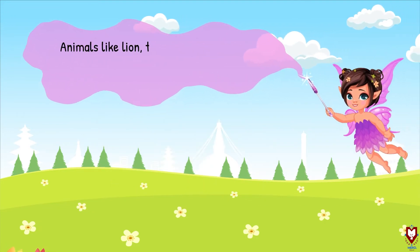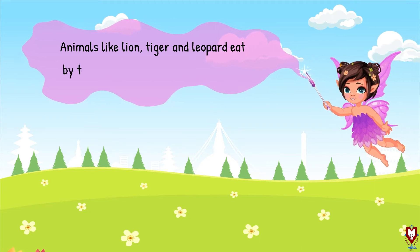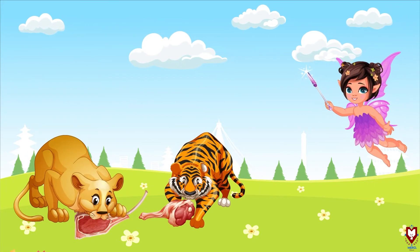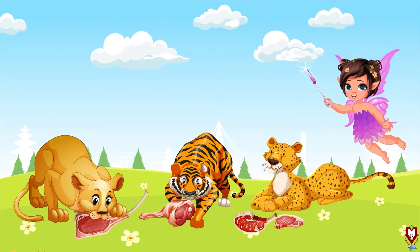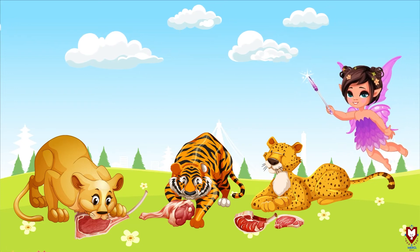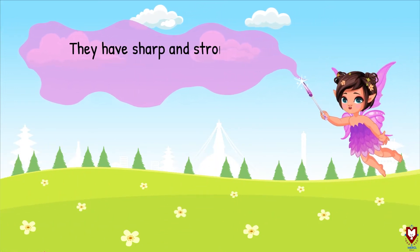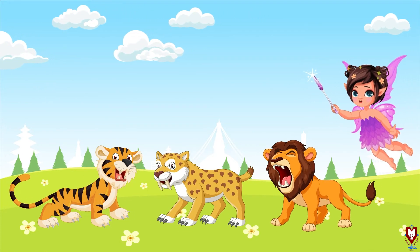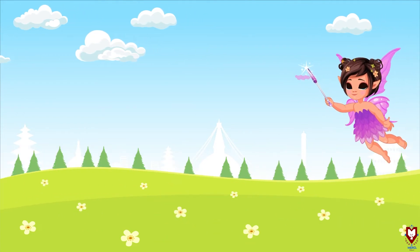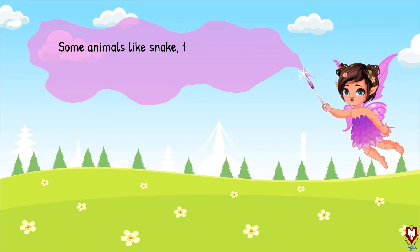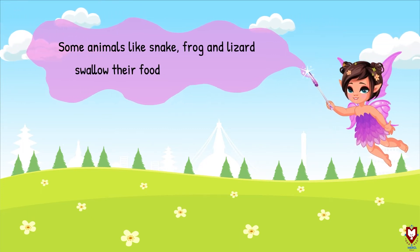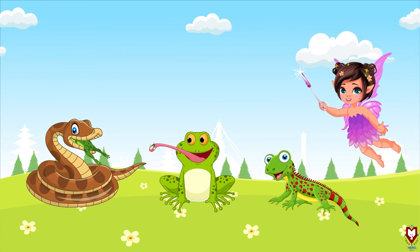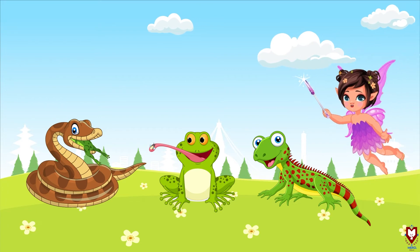Animals like lion, tiger, and leopard eat by tearing the flesh attached to bones. They have sharp and strong teeth to tear the flesh. Sarpa vaghuta rr chepar ro jastha janavar le khana na cha paai singa indilne garchan.